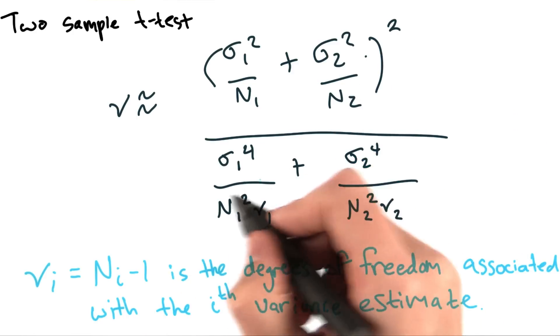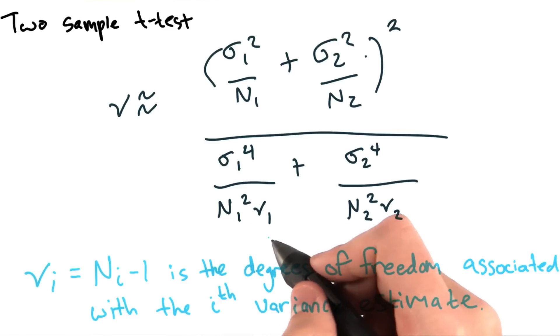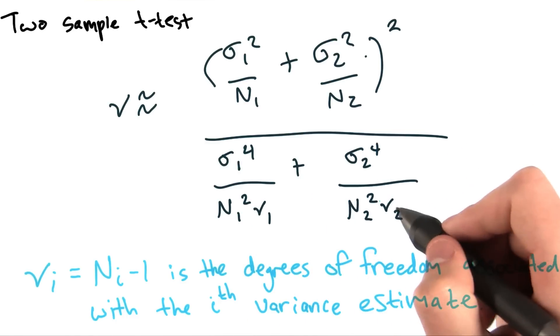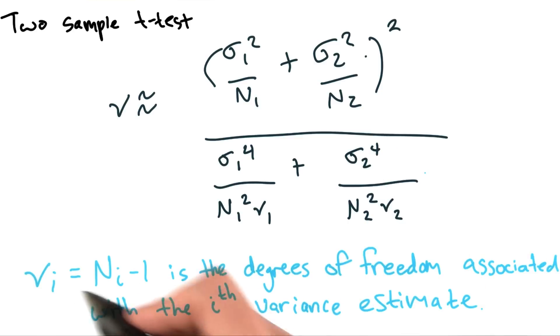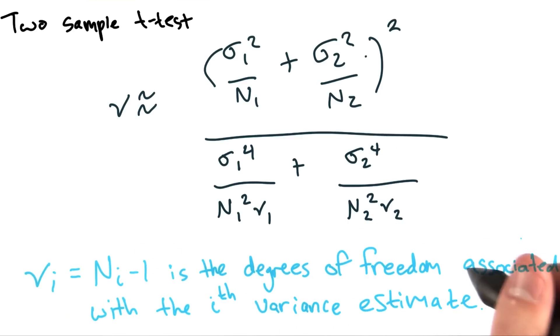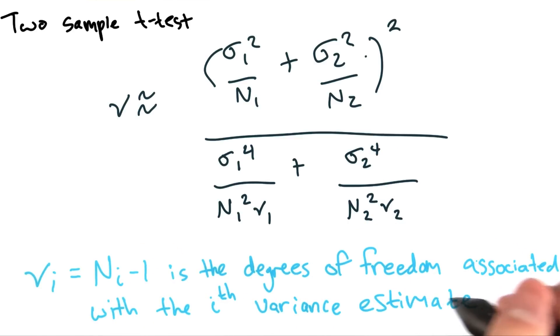over sigma1 to the fourth over n1 squared nu1, plus sigma2 to the fourth over n2 squared nu2. Where nui is equal to ni minus 1, and this is the degrees of freedom associated with the i-th variance estimate.